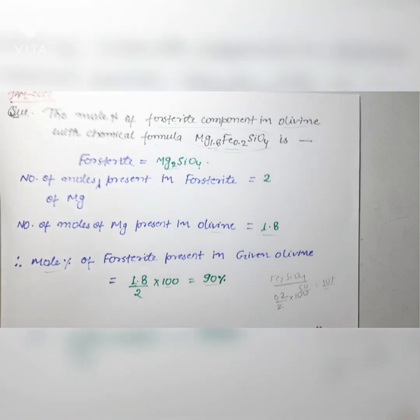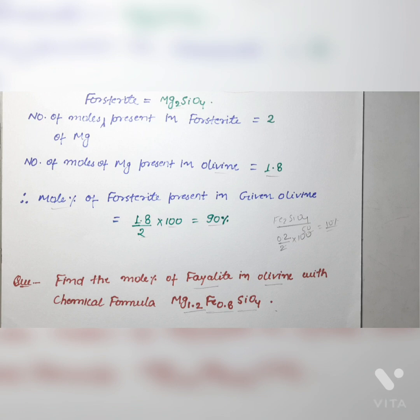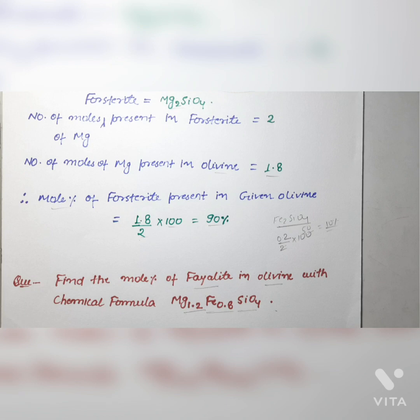Here is a practice question for you: find the mole percentage of fayalite in olivine with the chemical formula Mg₁.₂Fe₀.₈SiO₄. Try to solve this, and if you are unable to, let me know in the comments. If you solve it, write the answer in the comment box. That's it for today — if you liked the video, press the like button, subscribe, press the bell icon, and share with your friends. Keep learning, stay safe, and see you in the next video!